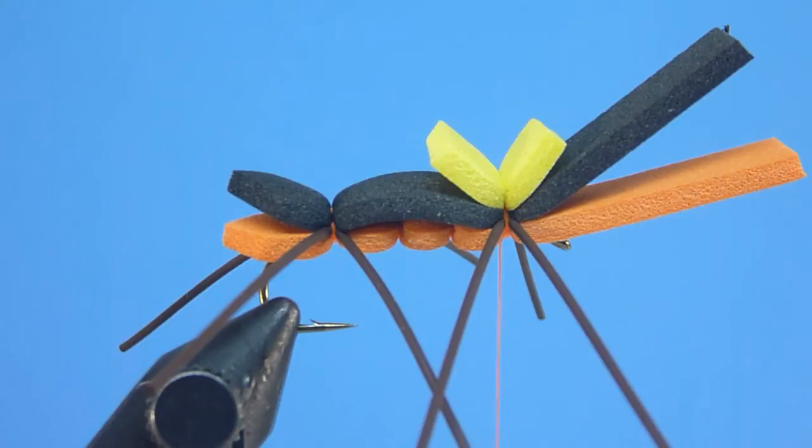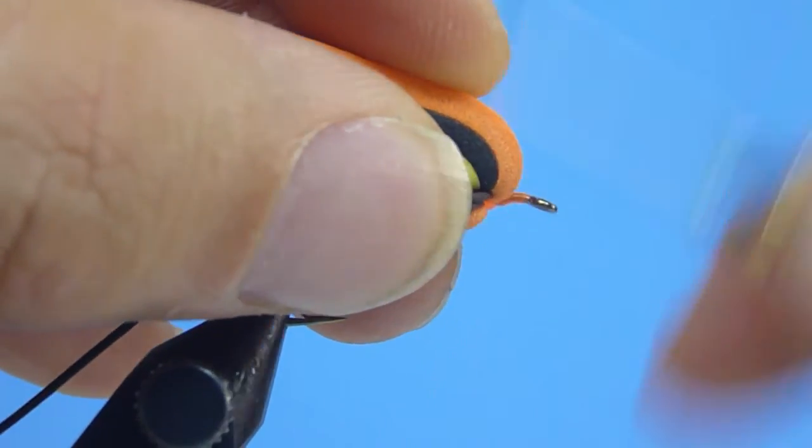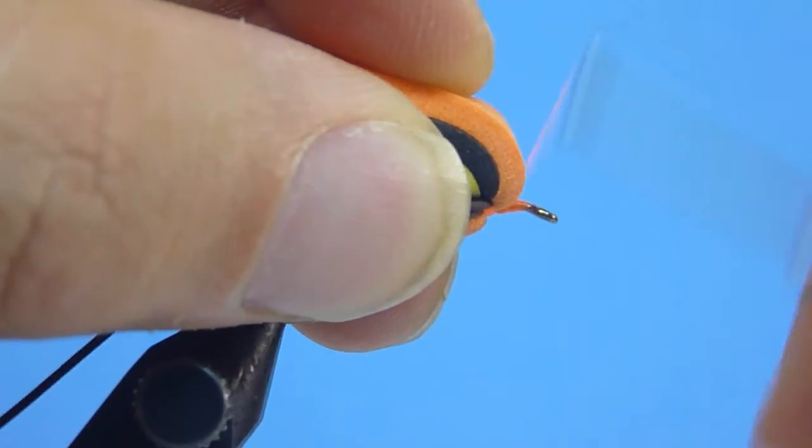With our body, legs, and indicator posts all settled, we'll next pull rearward both the black and orange foam strips, helping expose our shank, and we'll build quickly in front of them towards our hook eye a nice, neat, thick-wound thread base.